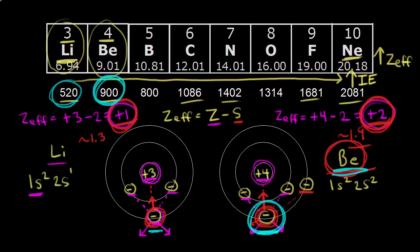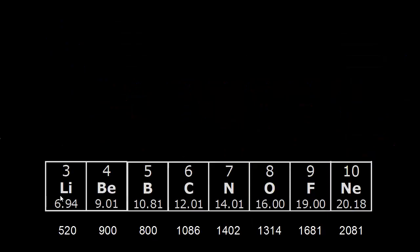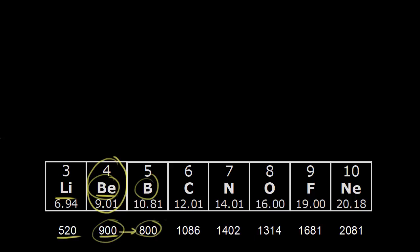So the difference in ionization energy between lithium (520 kJ/mol) and beryllium (900 kJ/mol) comes down to effective nuclear charge. But as we go from beryllium to boron, even though the effective nuclear charge still increases, the ionization energy actually drops from 900 kJ/mol down to only 800 kJ/mol — a slight decrease.